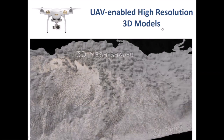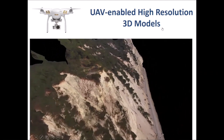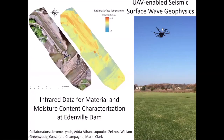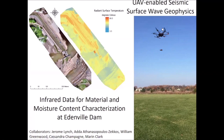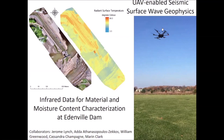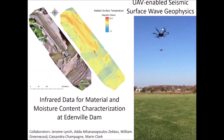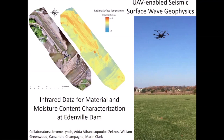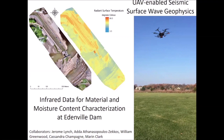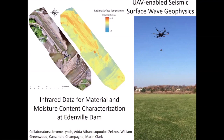We can also use UAVs equipped with multiple sensors to collect additional data. For example, infrared imagery can be used to assess the moisture content of the soil and rock mass, as we have done in the imagery shown for the Edenville Dam failure in Michigan. We have also used UAVs to collect shear velocity data of the ground. In the not-so-distant future, tireless, battery-recharging, completely autonomous UAVs will be collecting spatially distributed subsurface data at rates that are now impossible.